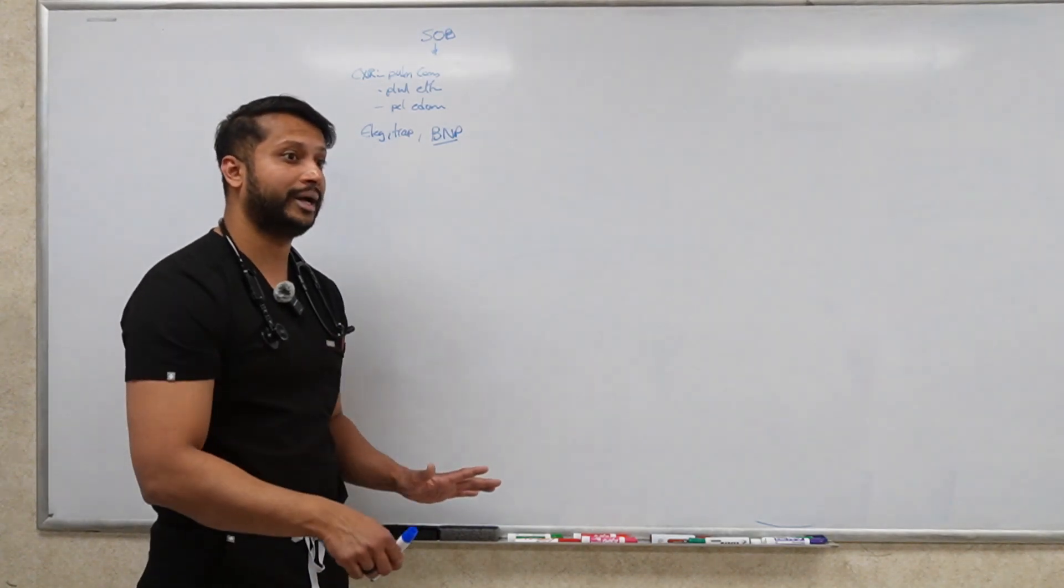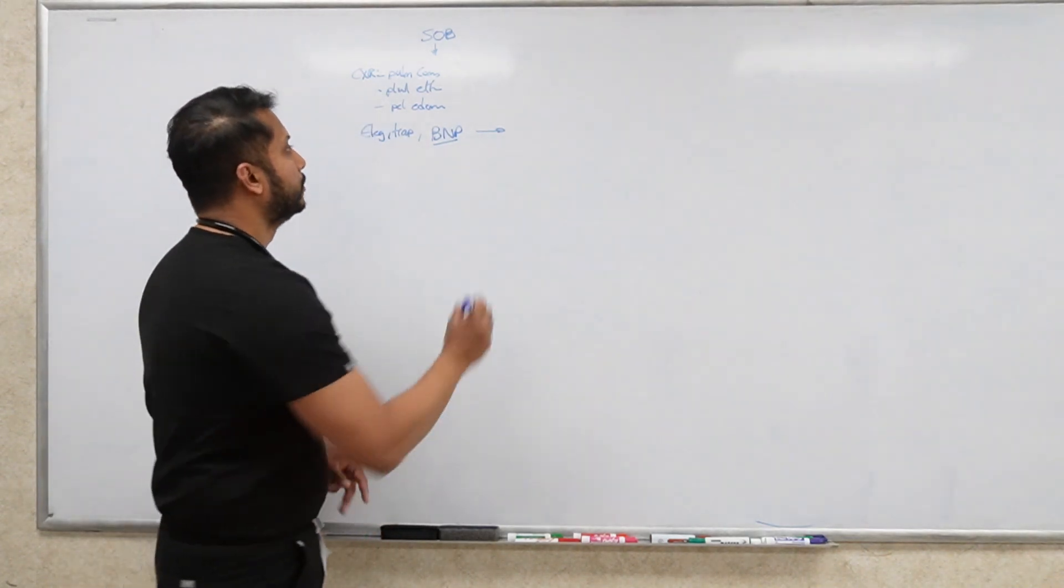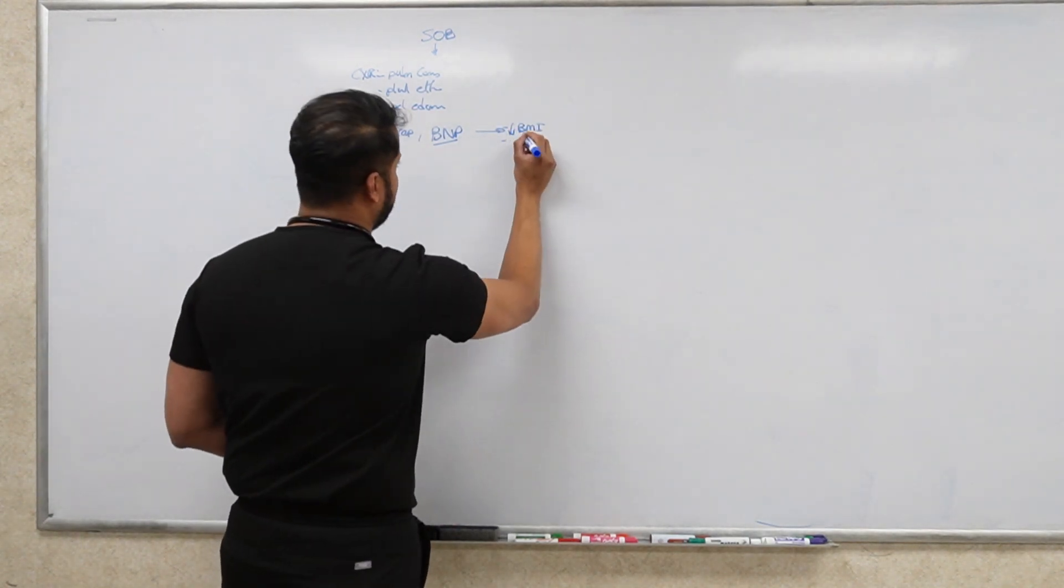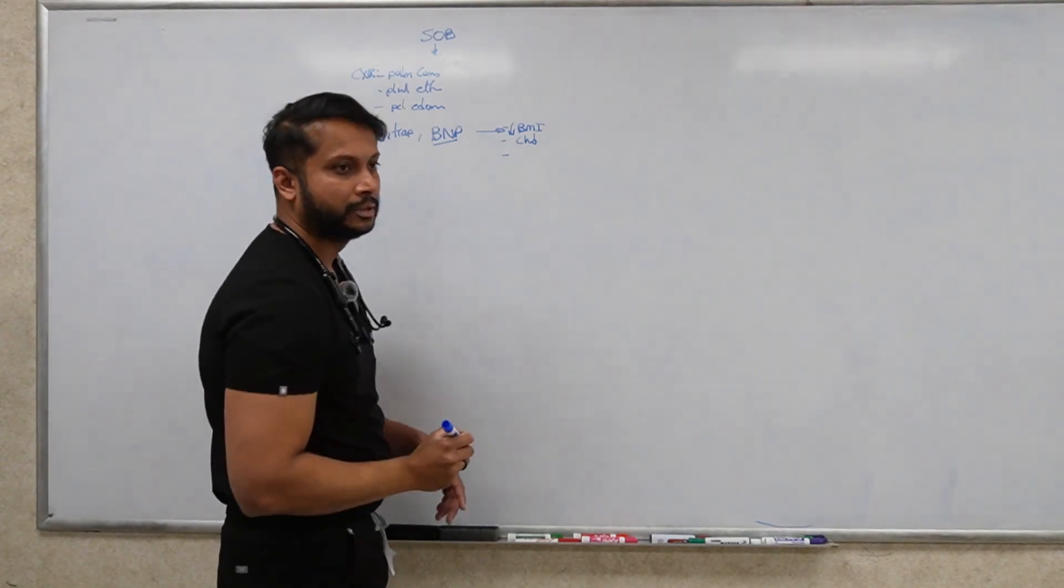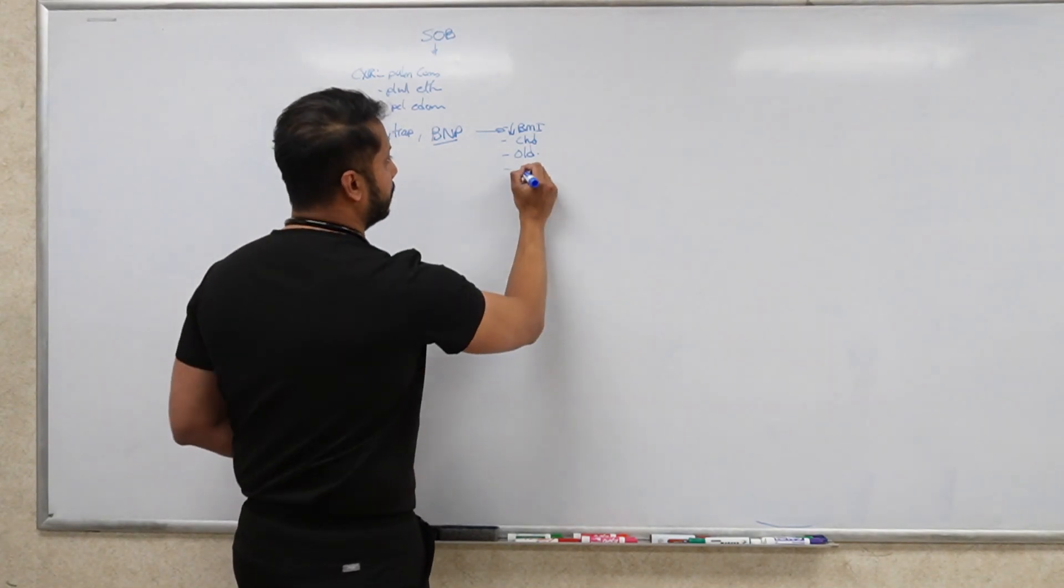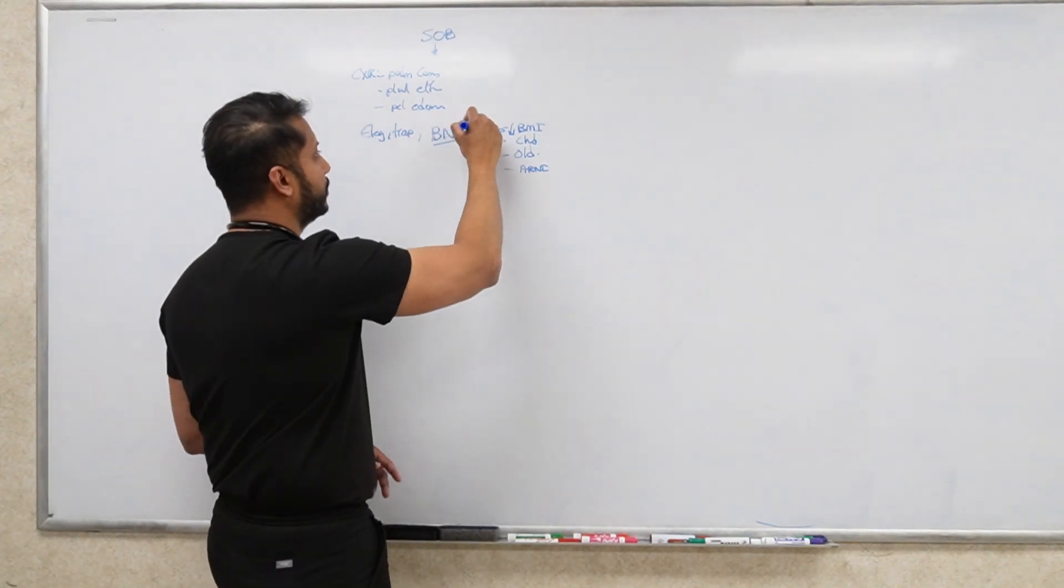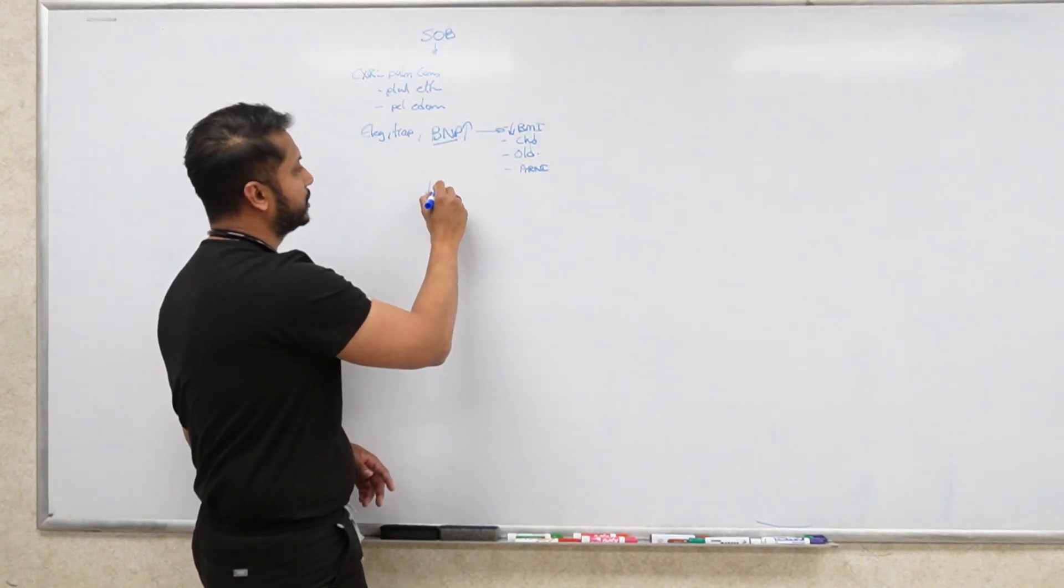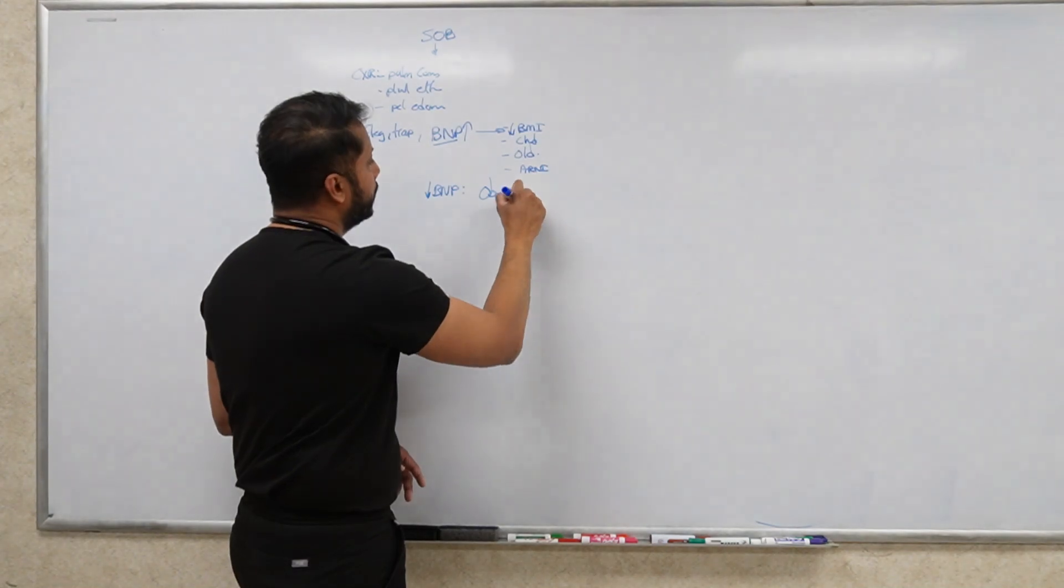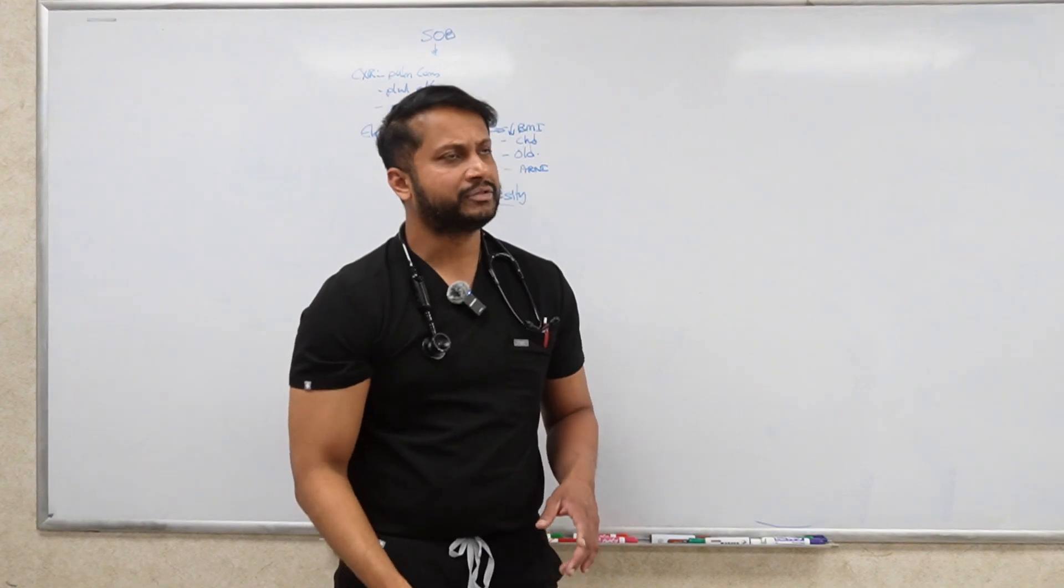BNP is a surrogate marker. It could be falsely elevated in some patients whereas it could be falsely low in others. When would it be falsely high? Low BMI, CKD, old people, age, and our famous drug Arni. If you have that, then your BNP will be falsely elevated. Who will have a low BNP falsely? Obesity.